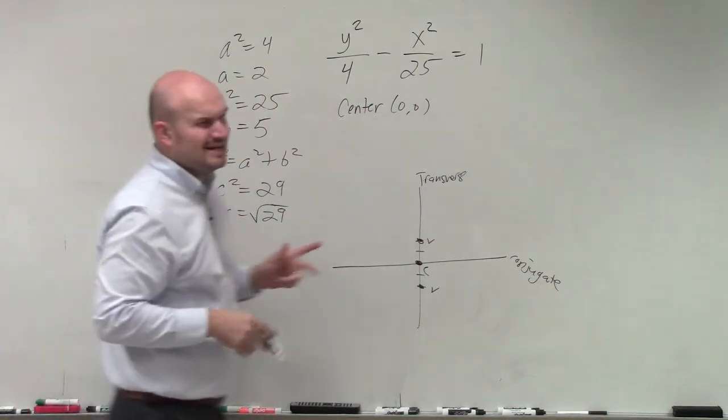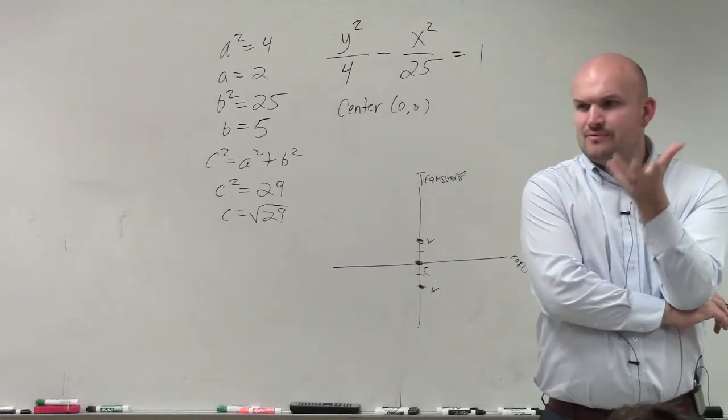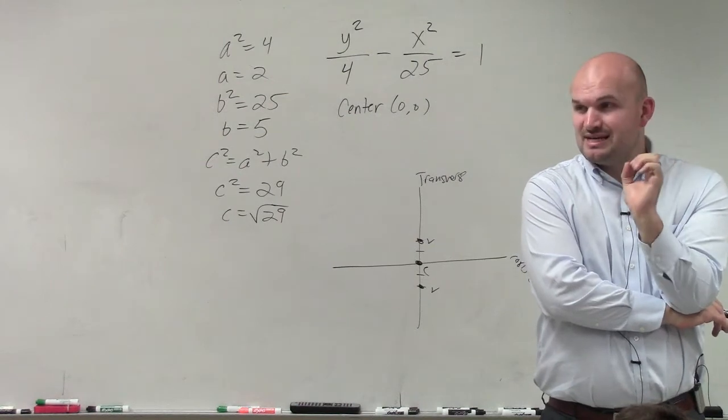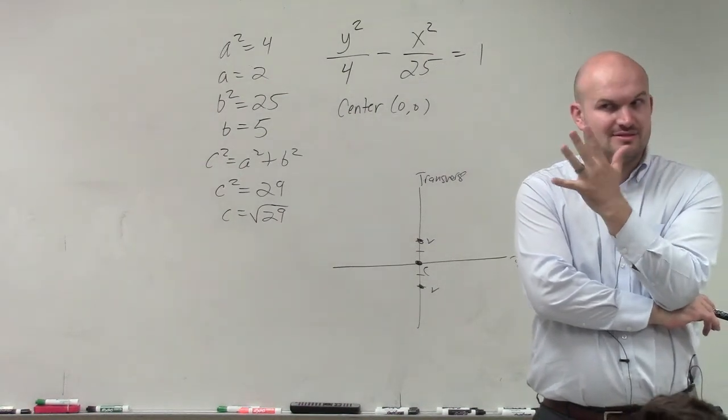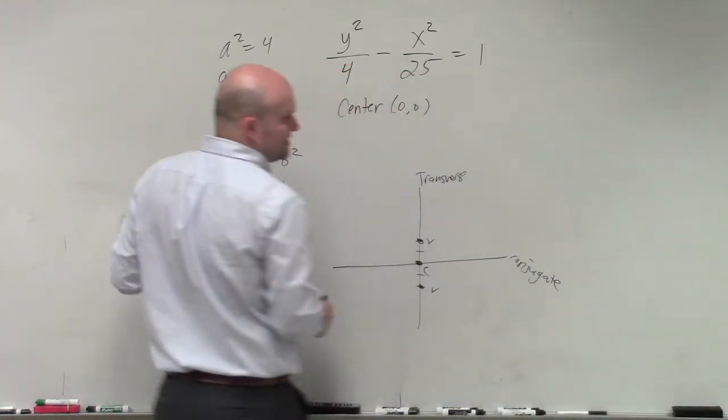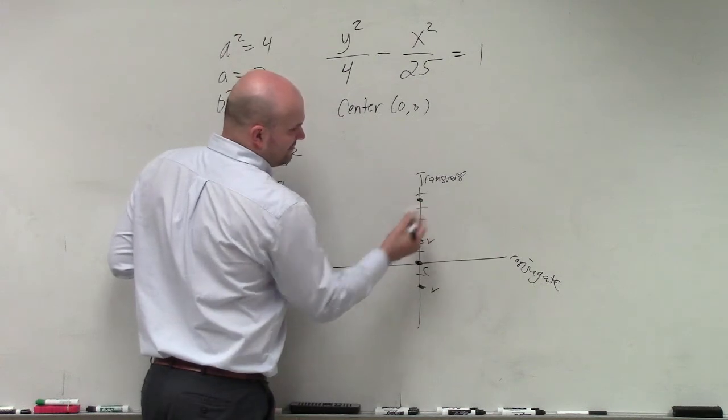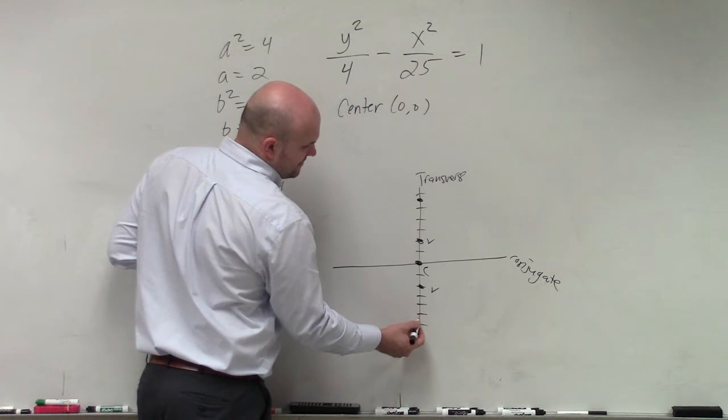My foci is square root of 29, which, hmm. Square root of 29, where is that? Well, think about it. Square root of 25 is 5. Square root of 36 is 6. So would you guys agree with me square root of 29 is somewhere in between 5 and 6? Yeah. Yep. That's about as close as you guys need to get. 1, 2, 3, 4, 5, 6. Somewhere between 5 and 6. 1, 2, 3, 4, 5, 6. Somewhere between 5 and 6. Foci.